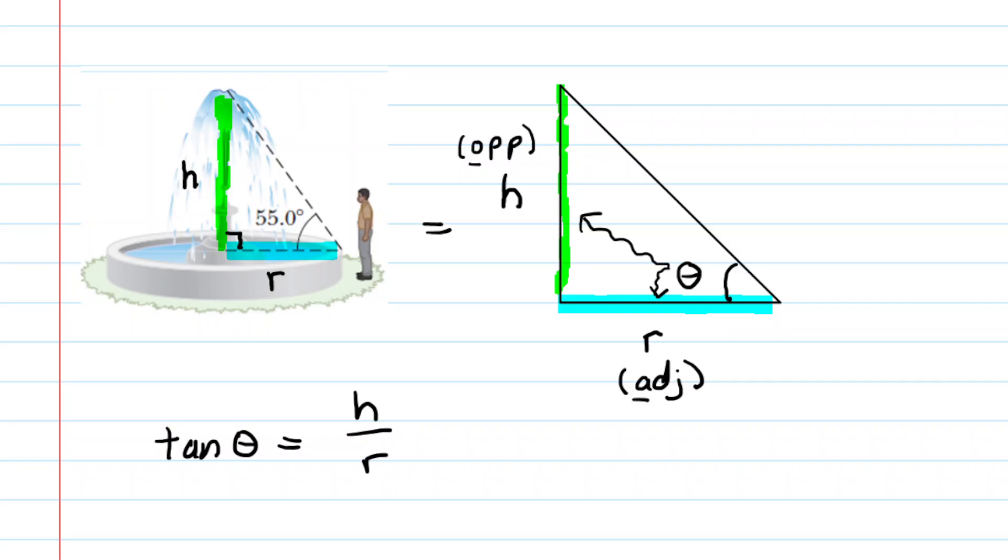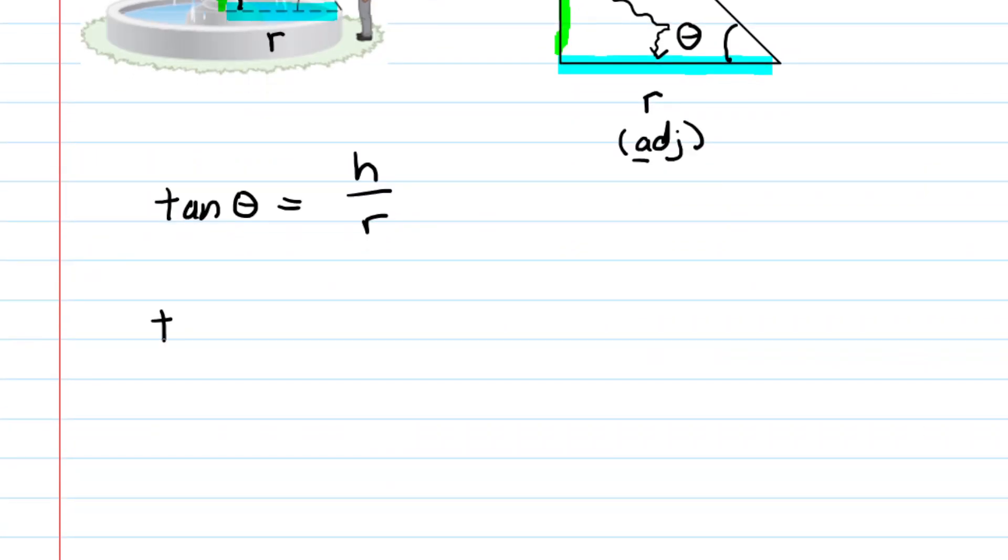And what's nice is that we know the angle. It was given to us as being 55 degrees, and then we just figured out what the value of r was. That radius was 2.387 meters.